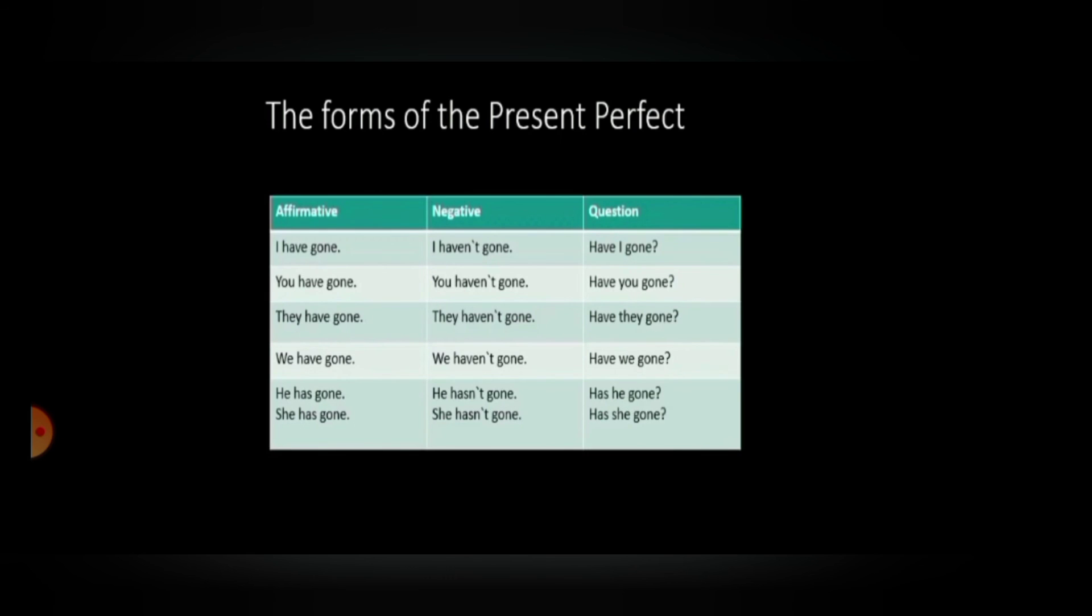Now, the last kind, the question types. Have I gone? Here, one thing is very clear that the auxiliary verb should take the first place followed by the subject. Have I gone? You have, have you gone? Have they gone? Have we gone? Has he gone? Has she gone?